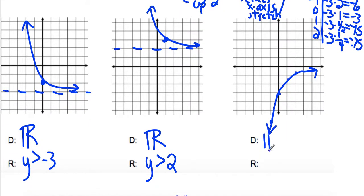Our domain is still all real numbers. And, since we flipped the whole thing over, our range is going to be greater than 0.